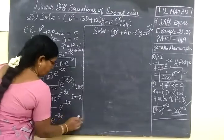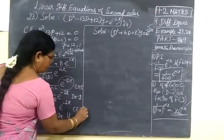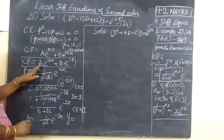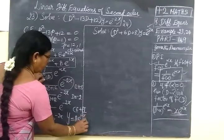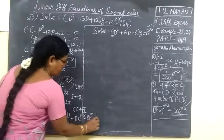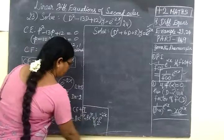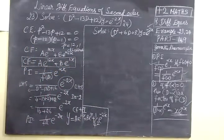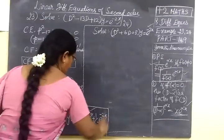So the general solution: y equals complementary function plus particular integral. The complementary function is a e power 12x plus b e power 1x, plus the particular integral 1 by 42, e power minus 2x. Now we have the answer for that.